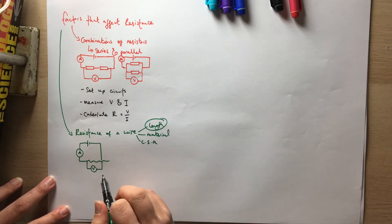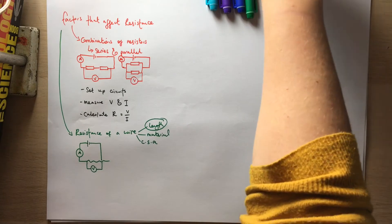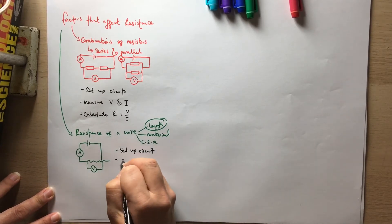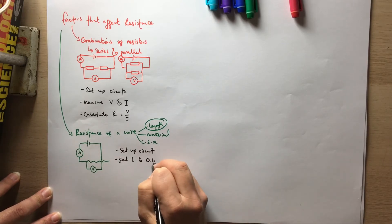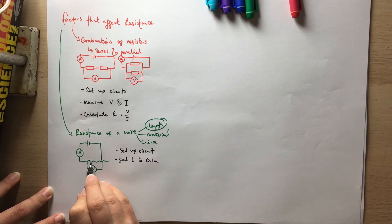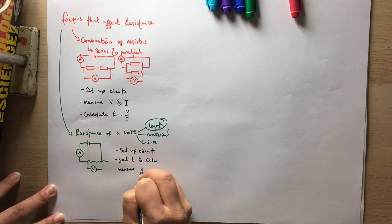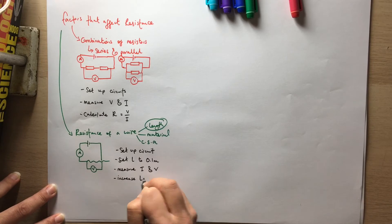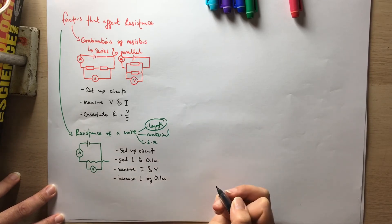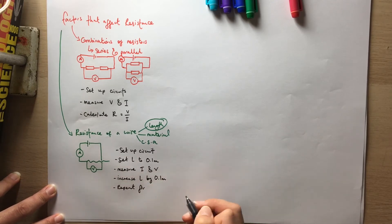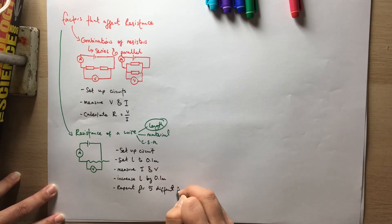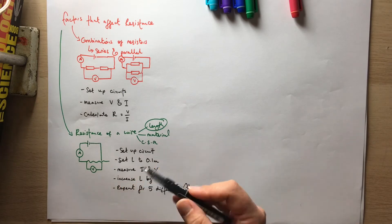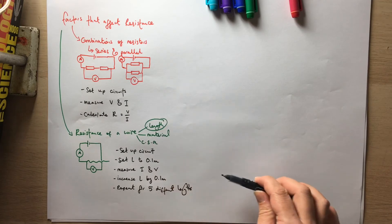You would have a ruler alongside the wire, though you don't need to draw it in the circuit diagram. The method is: set up the circuit, set the length to a starting value such as 10 cm, measure I and V, then increase the length by 0.1 m and repeat for five different lengths. We use five different values so we can be more confident of the pattern.